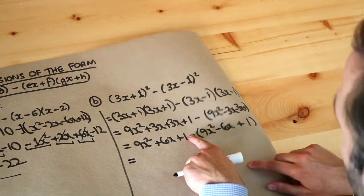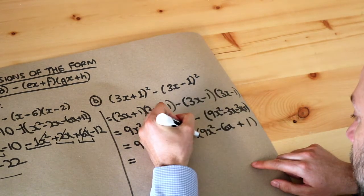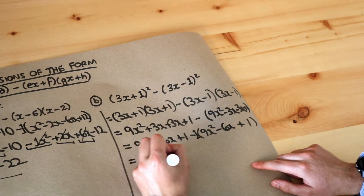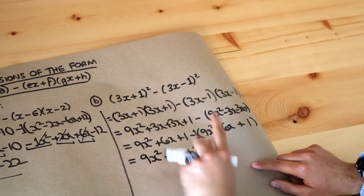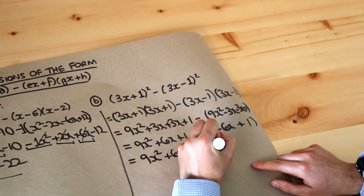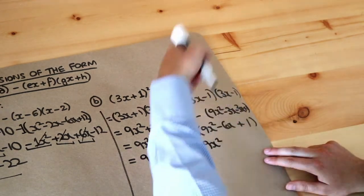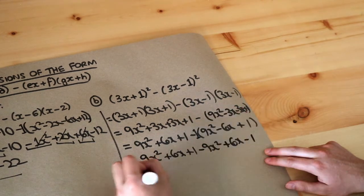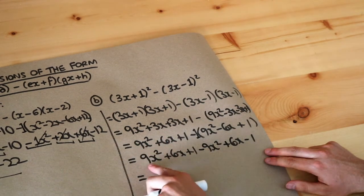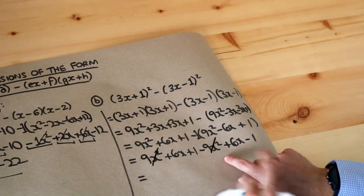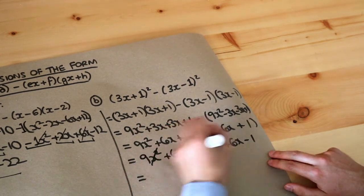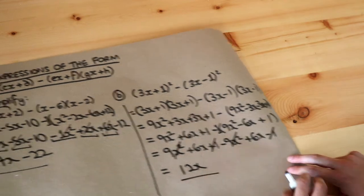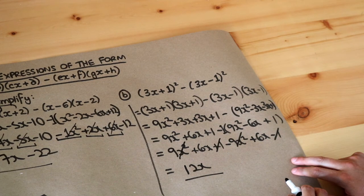With minus and a bracket, we put a ghostly 1 there — it's one lot of this thing. Expanding: minus 1 times 9x squared is minus 9x squared; minus 1 times minus 6x is positive 6x; minus 1 times plus 1 is minus 1. Collecting like terms: 9x squared minus 9x squared cancels, and 1 minus 1 also cancels, leaving 6x plus 6x which is 12x. That is the final answer.